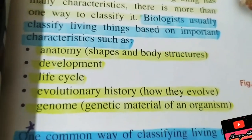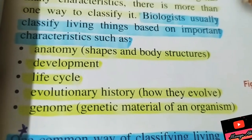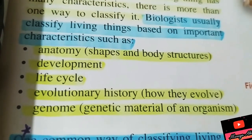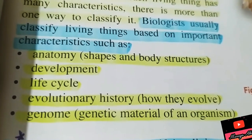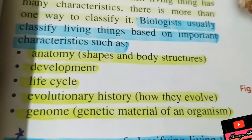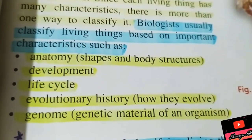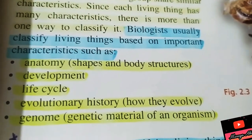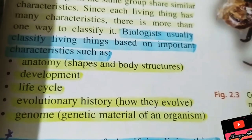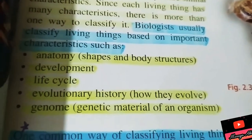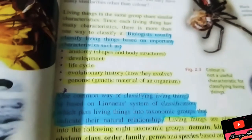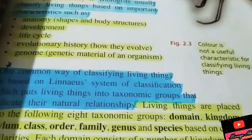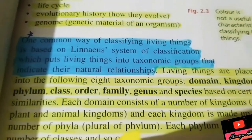What is anatomy? It is the shape and body structure. What is development? These are the stages from a baby, egg, or seed to a fully grown animal or plant. Biologists also study life cycles, then evolutionary history — how organisms have changed over time — and finally the genome, which is the genetic material found in the nucleus.